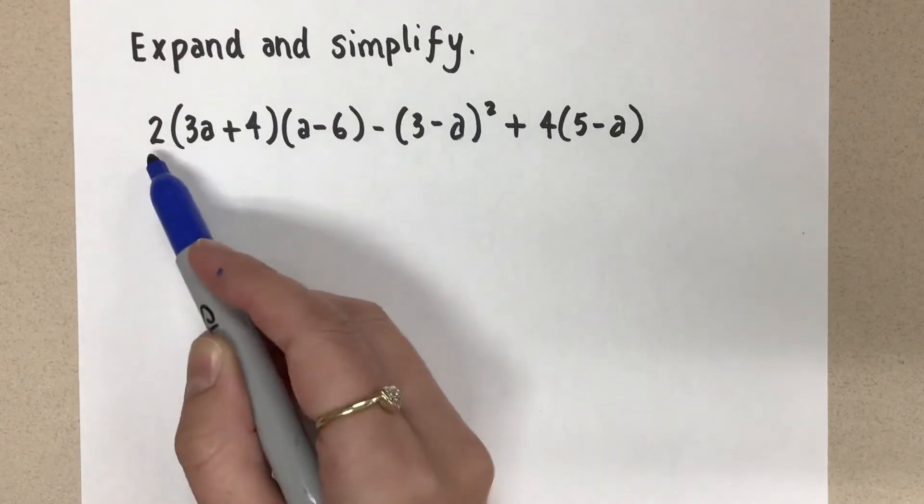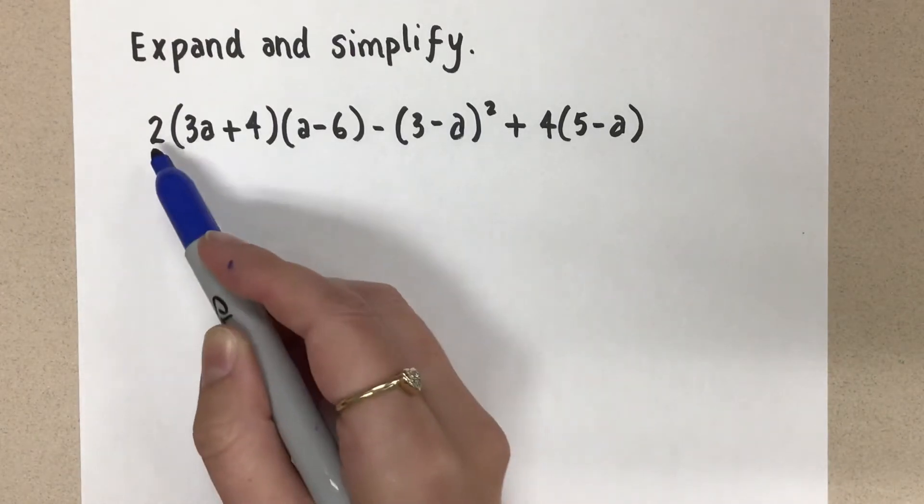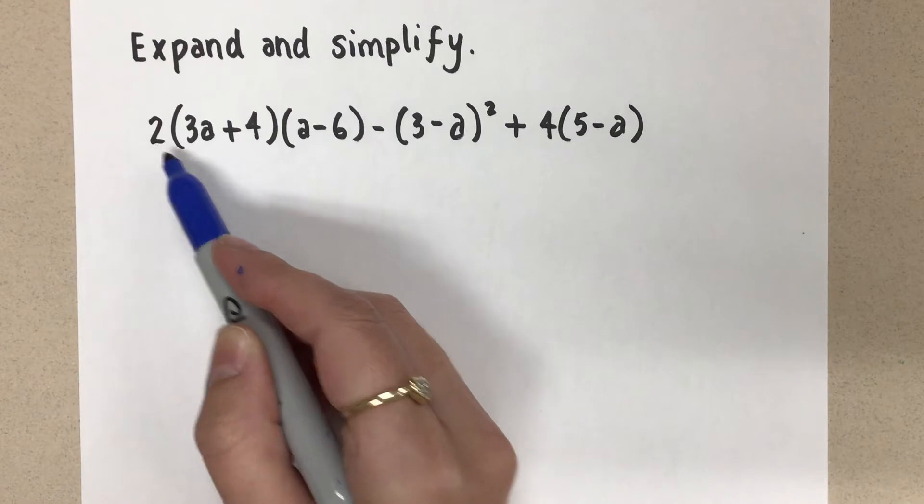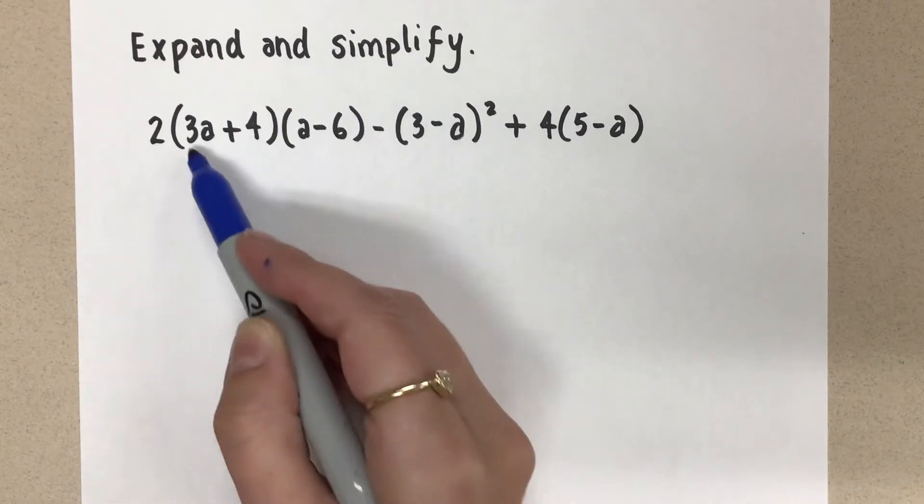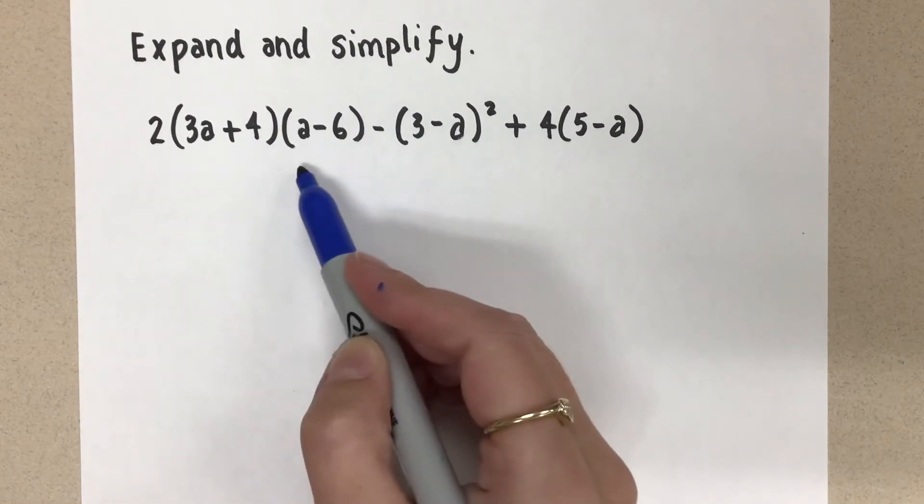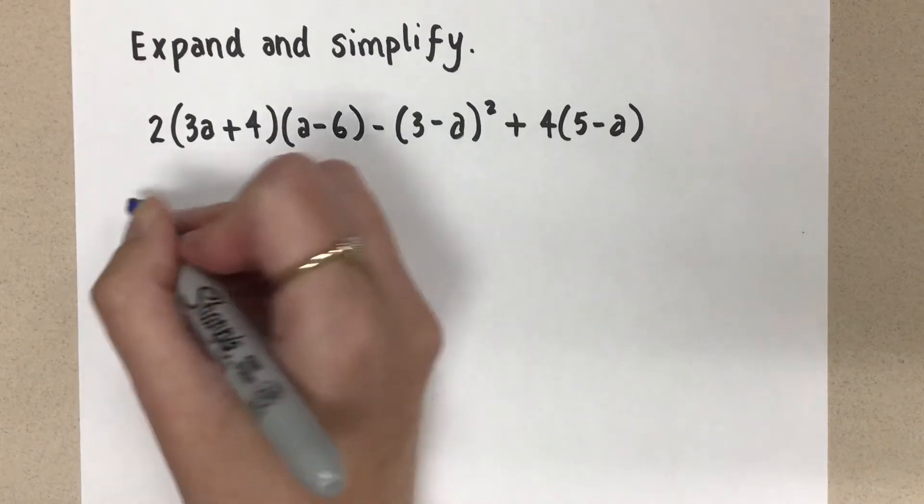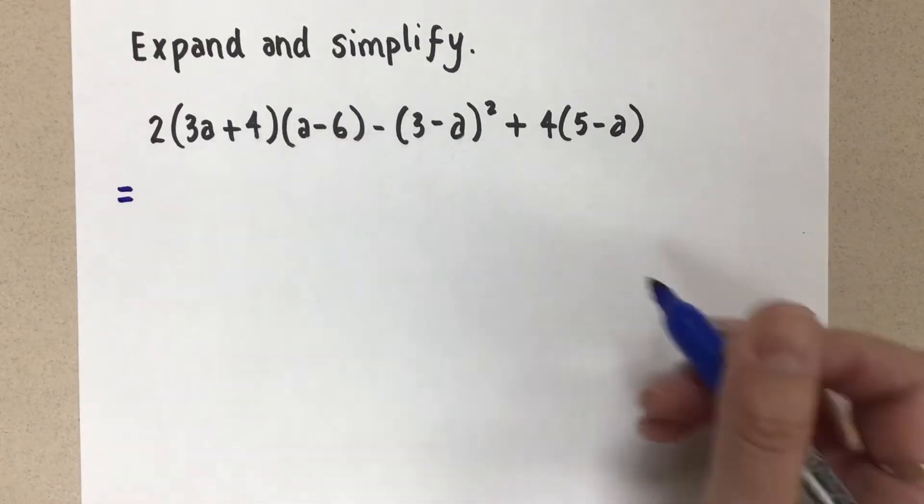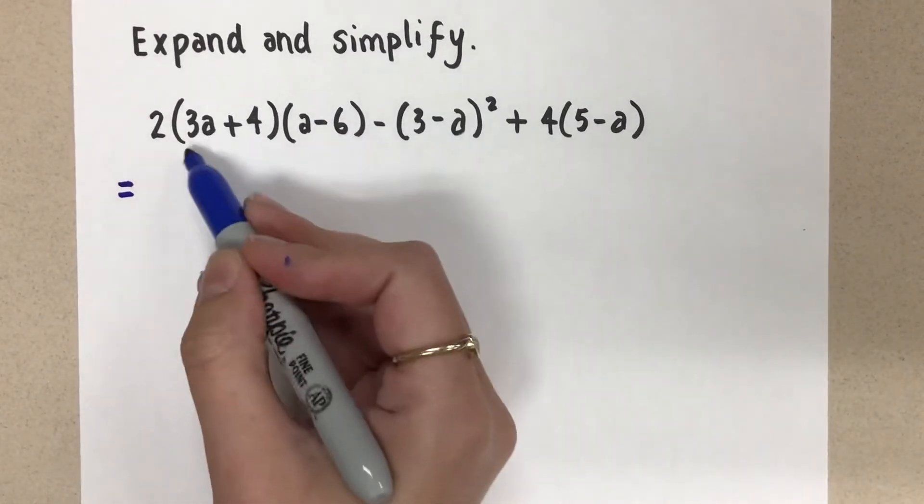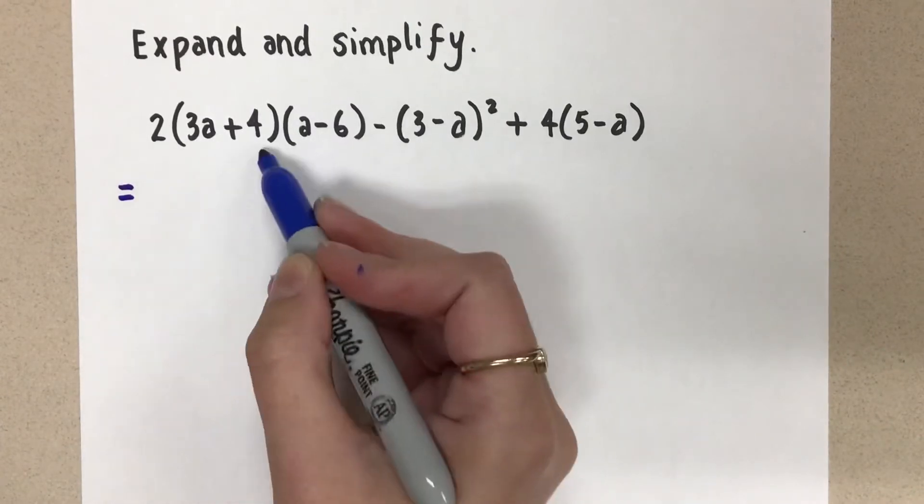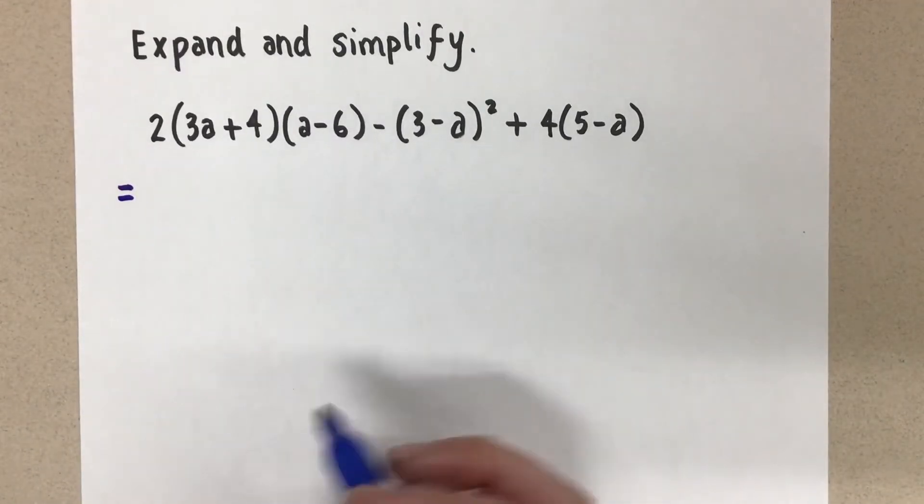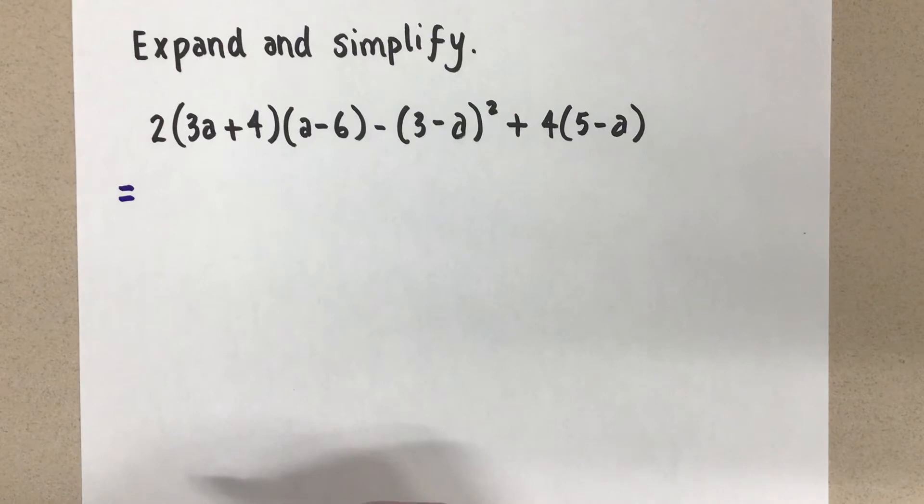You don't have to do it that way. You can distribute the two, but be very careful when you do that. Because if you're going to multiply the two, you have to do two times only one of the binomials, not both of them. And that tends to be an area where we make a common mistake. So just be really careful. If you choose to distribute the two first, only do it into one of these brackets, not both. Otherwise you're multiplying by four.